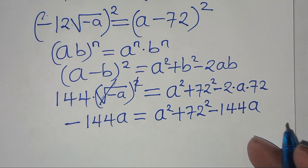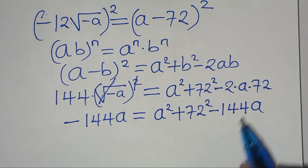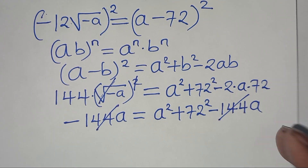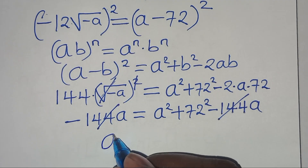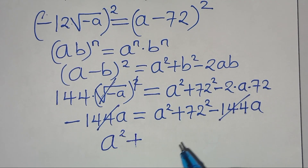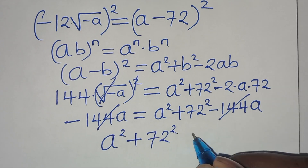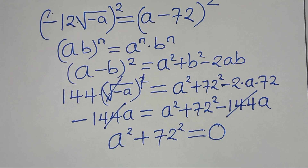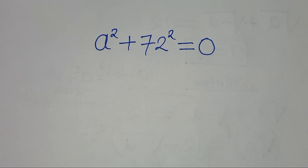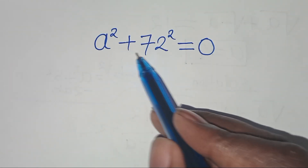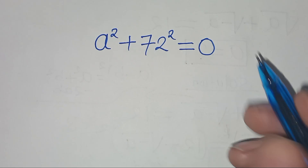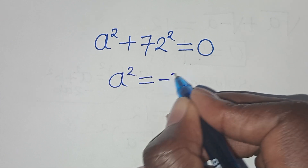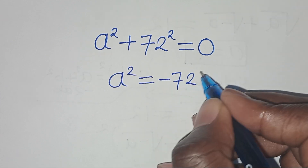The −144a terms cancel on both sides, simplifying to a² + 72² = 0. This implies that a² = −72².